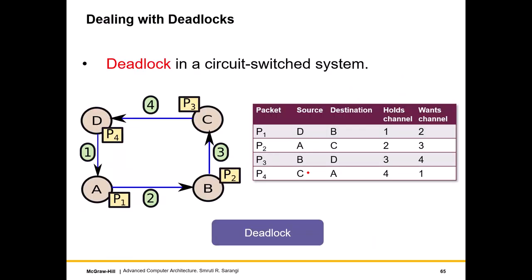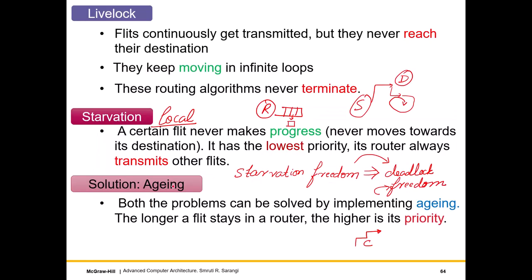Livelocks and some aspects of starvation can be handled by aging, which is a local property. If we have a deadlock avoidance protocol that prevents deadlocks from happening, then we are guaranteed there will always be someone to send a packet to. For starvation and livelocks we just implement aging as a local solution — internally a priority system that does not allow a flit to stay in the router indefinitely, increasing its priority until it is definitely sent.